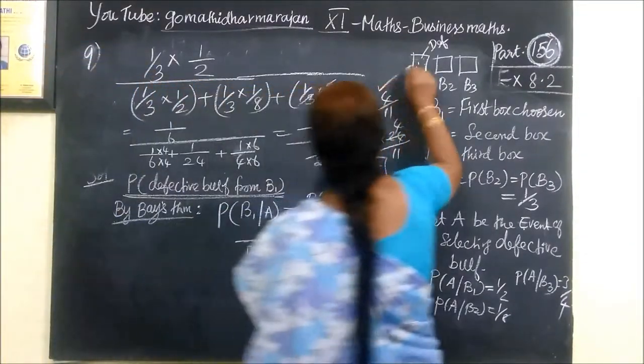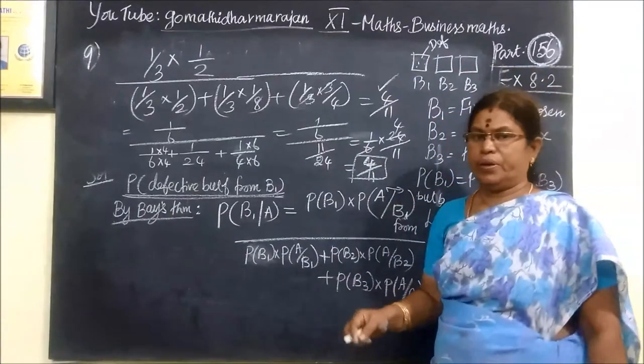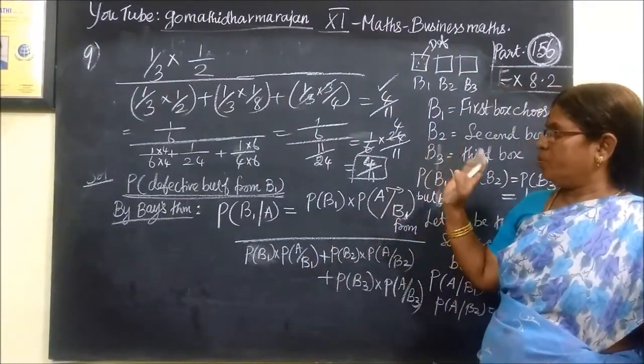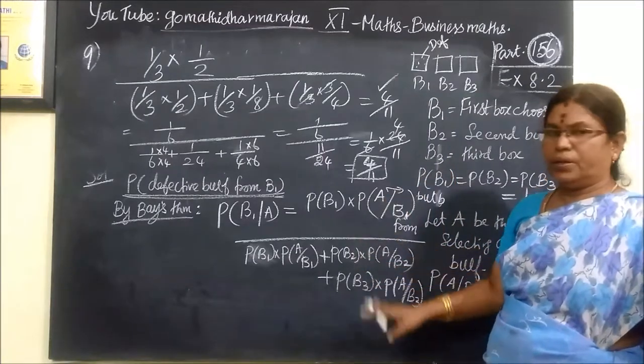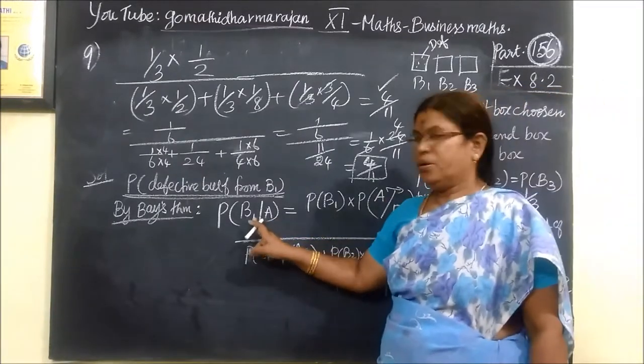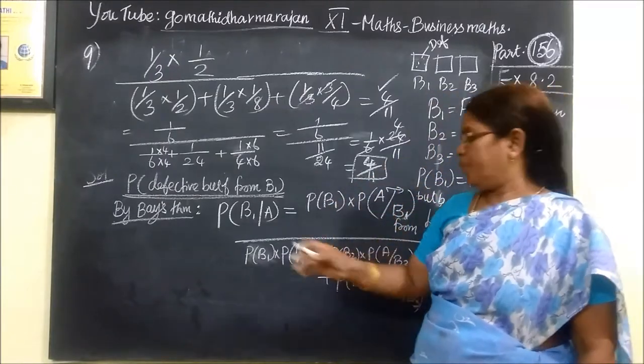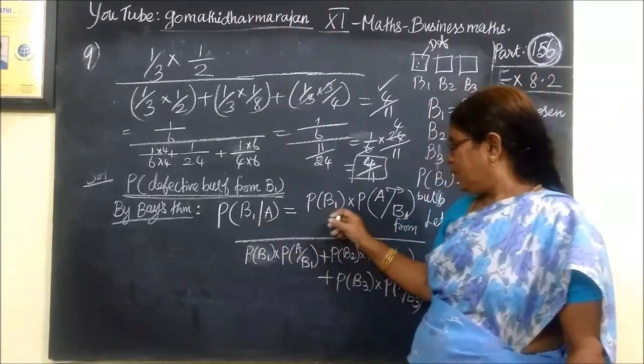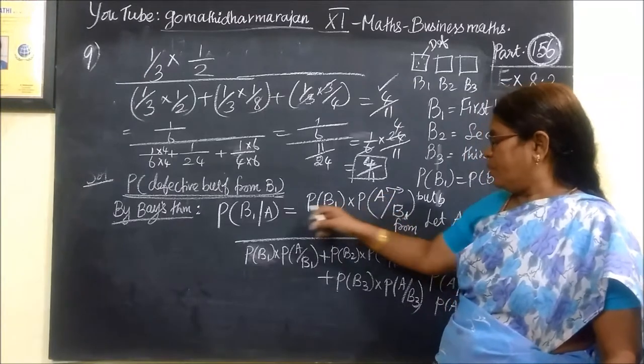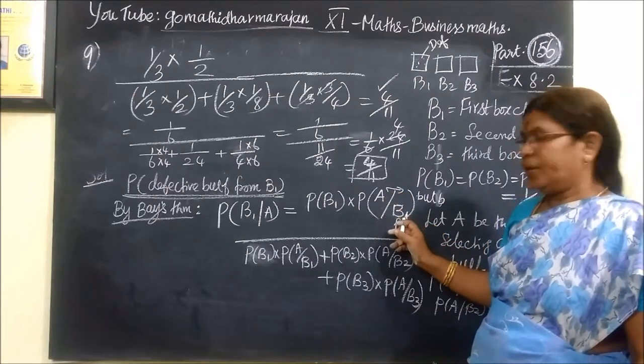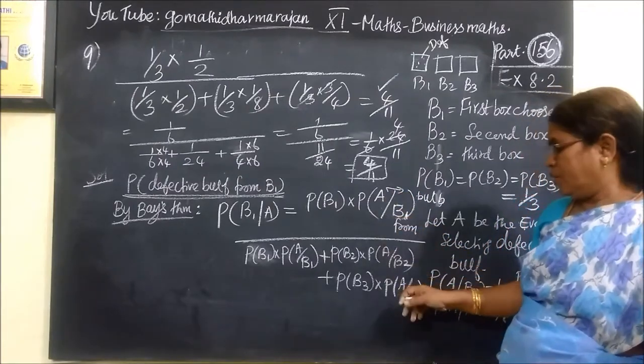So this is equal to 1 by 6, then it is very easy to write. It is very easy to write. Because it is 3 bags. What is the number of bags? We are collecting the bulb from the bag where one appears to be present.